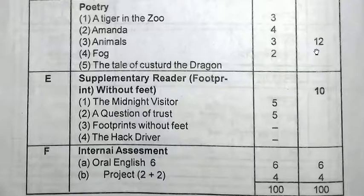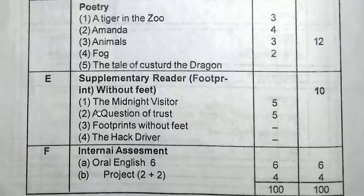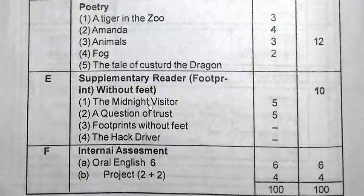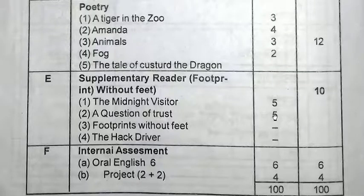In the three lessons we have 'Glimpses of India' in Pre-Final 2. Here is the poetry section — so that's the supplementary reader, 'Footprints Without Feet.' The treatment of trust is the first part, the midnight visitor is the next, and the question of trust is the 10th number.